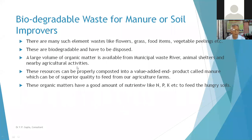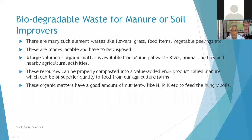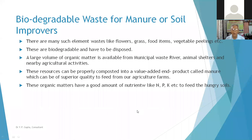Large volumes of organic matter available from municipal waste, animal shelters, and agricultural activities can be properly composted into value-added products called manure. This can be used as superior quality feed for agriculture farms. It contains lots of NPK — nitrogen, phosphorus, and potassium — which is necessary for crop growth.